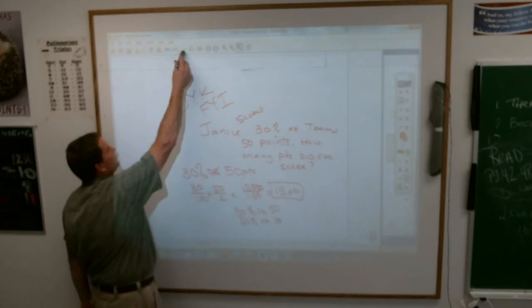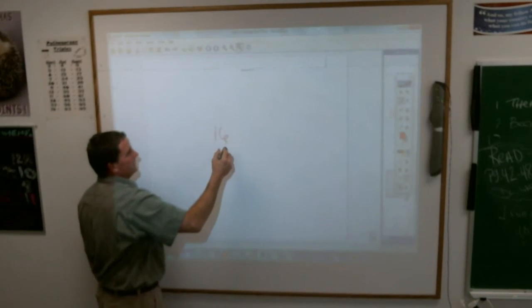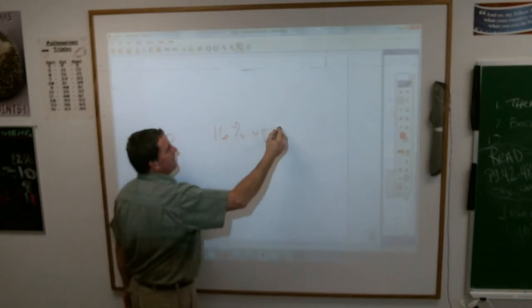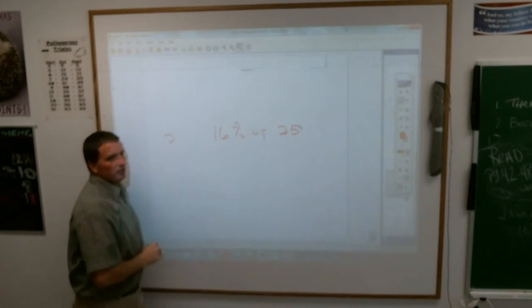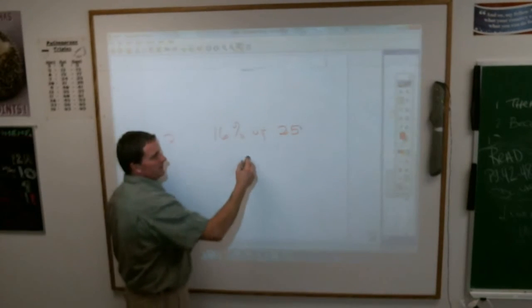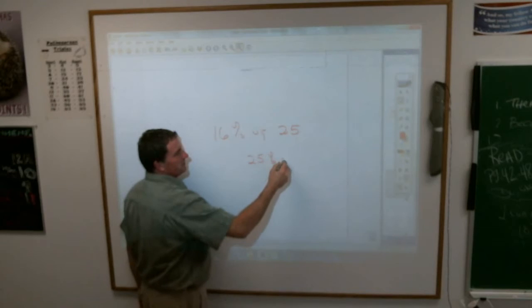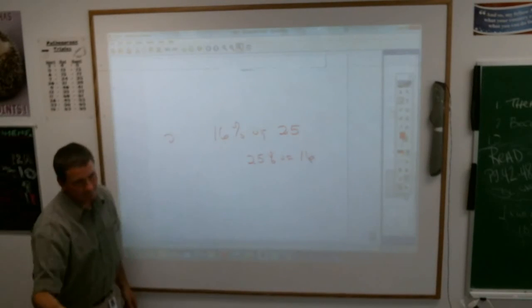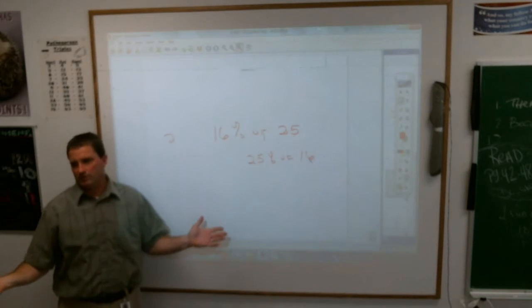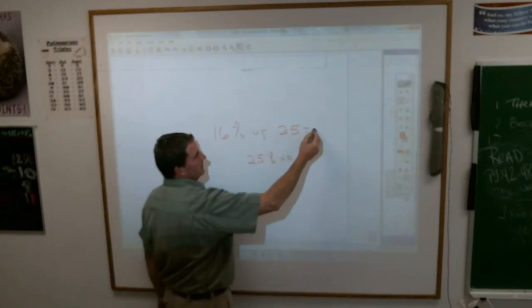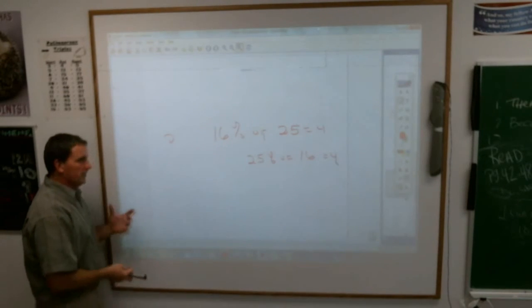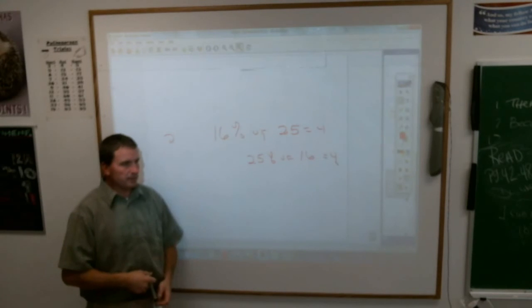Well, if I did this, children, 16% of 25 does not look like that fun of a problem, does it? No. But if I flip that around and say 25% of 16, what is 25% as a fraction? 1 fourth of 16. 4. This is 4, this is 4. So you can, if you think about it, help you out, flip that thing around.